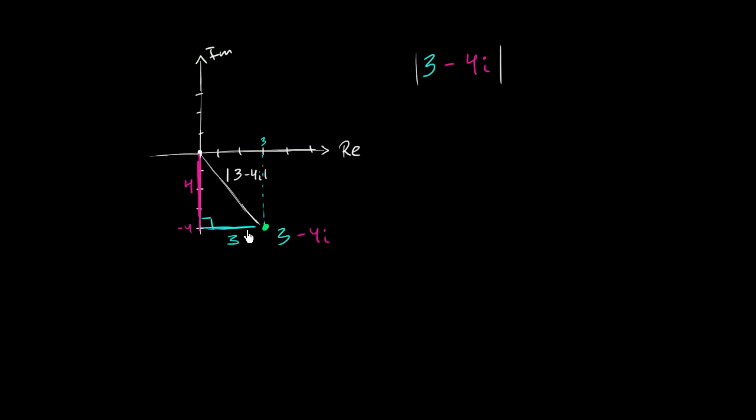So we use the Pythagorean theorem. This side squared, 3 squared, plus this side squared, 4 squared, is going to be equal to the absolute value of 3 minus 4i squared. So 3 squared plus 4 squared is 9 plus 16, which is 25. So 25 equals the absolute value of 3 minus 4i squared.